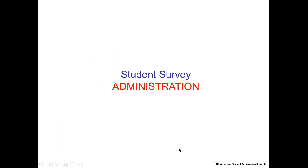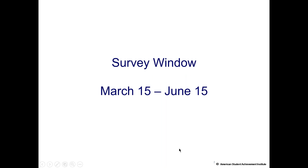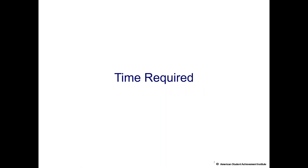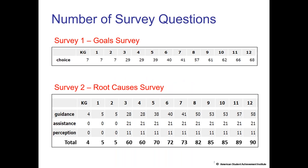The survey window is open for many months — from March 15th through June 15th. The time required depends on the grade level. A kindergartner has only 11 questions; a sixth grader has 51 questions across both surveys; a senior has 79 questions. Older students have more questions, younger students have fewer. At first glance this may seem like a lot, but the questions go very quickly because of how they're written — students are essentially just answering yes or no to straightforward questions.